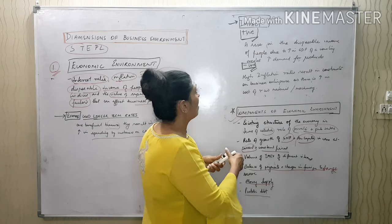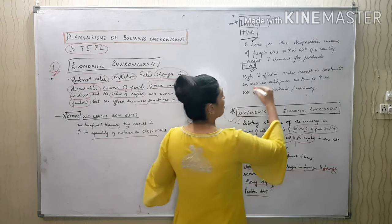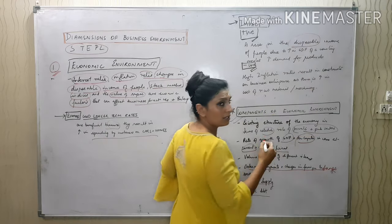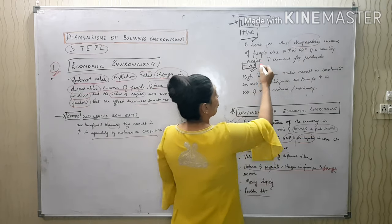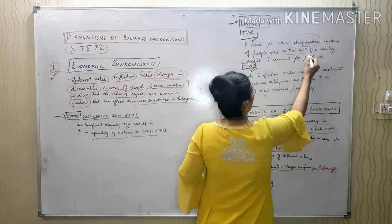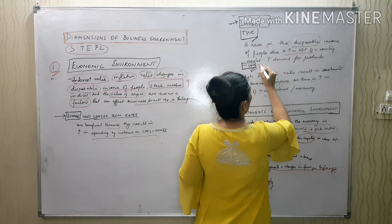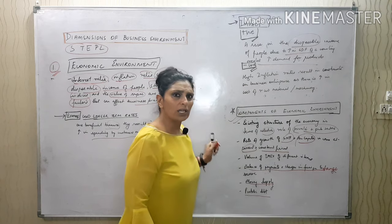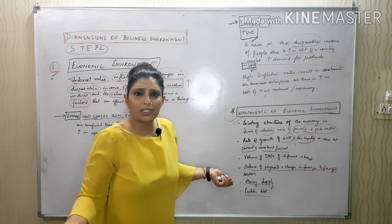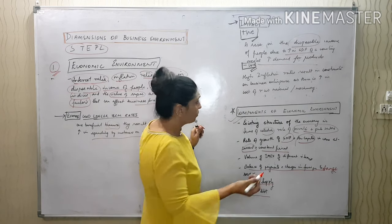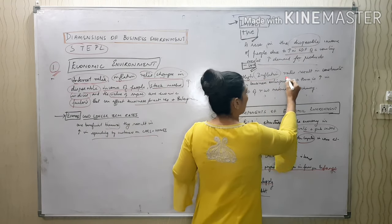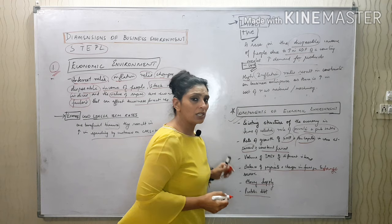When talking about the economic environment impact: if a consumer has high disposable income, they will have more money to buy products. Besides that, if inflation increases, what happens to the business? The cost of raw materials and machinery increases, they have to pay more salaries to their employees, and ultimately everything increases in totality.